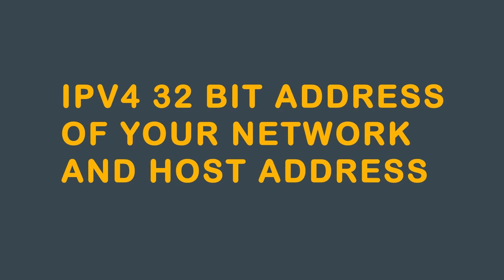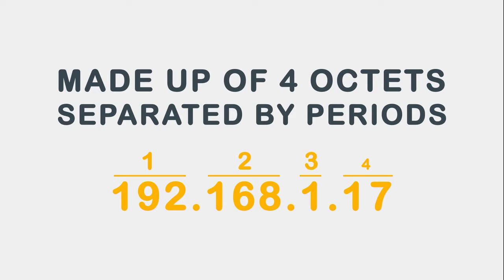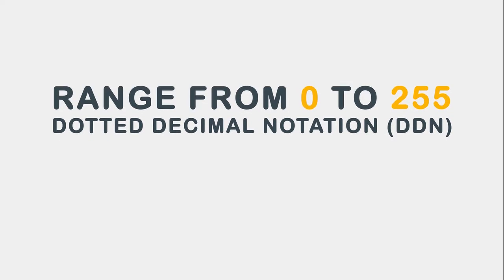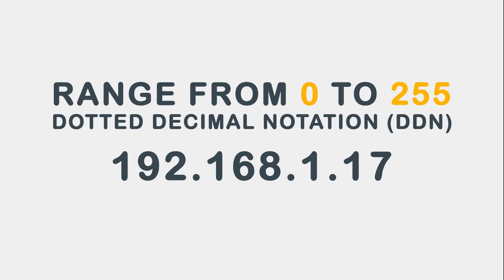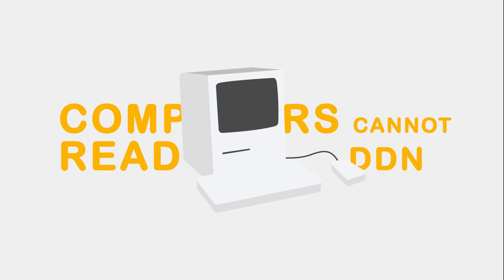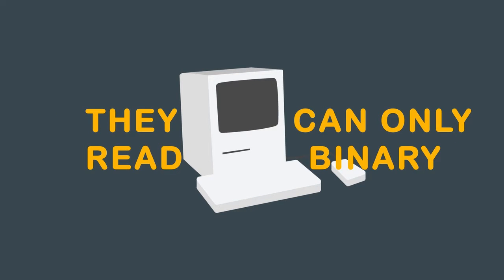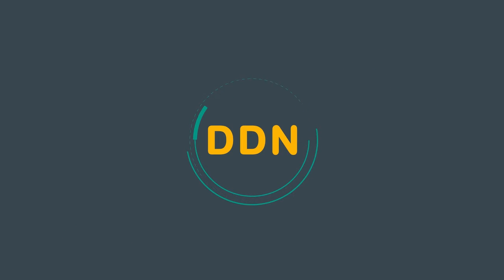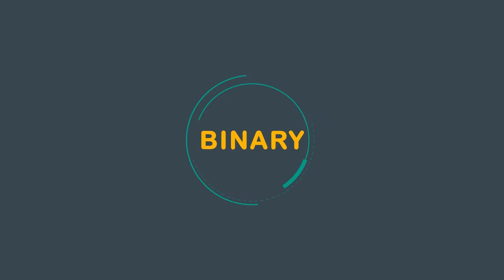IPv4 is a 32-bit address of your network and host address. It is made up of four octets separated by periods. Each octet has a range from 0 to 255 when written in dotted decimal notation, or DDN, as in 192.168.1.17. However, computers cannot read dotted decimal notation — they can only read two states, called binary. This section will show you how to take dotted decimal notation, or DDN, to binary format.